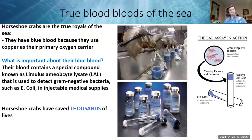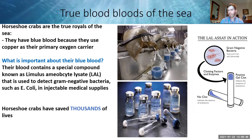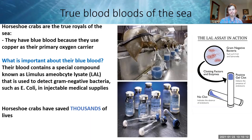Horseshoe crabs are important to humans because of a unique compound in their blue blood called Limulus Amebocyte Lysate (LAL). This compound is used to detect harmful bacteria in medical supplies such as vaccines and insulin strips for diabetics. They have saved thousands of human lives by preventing medical contamination. Instead of iron, they use copper as their primary oxygen carrier, which is why their blood is blue.